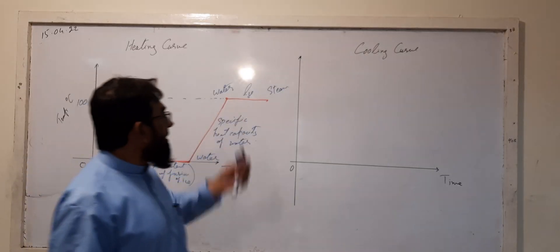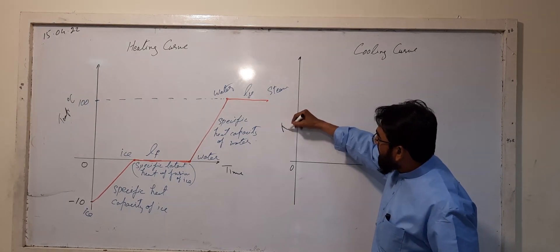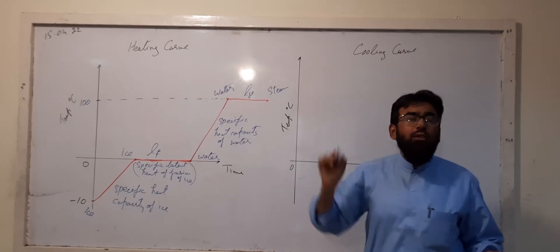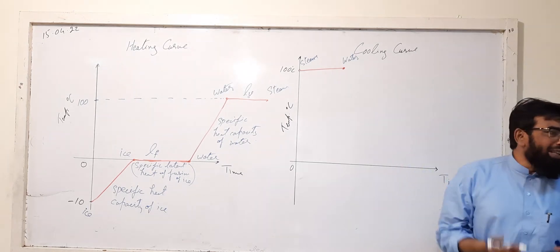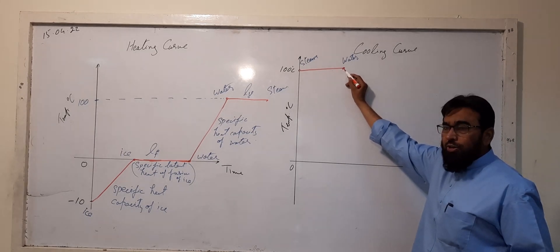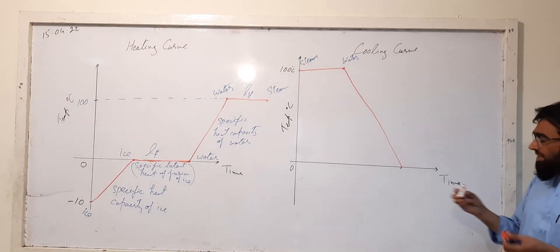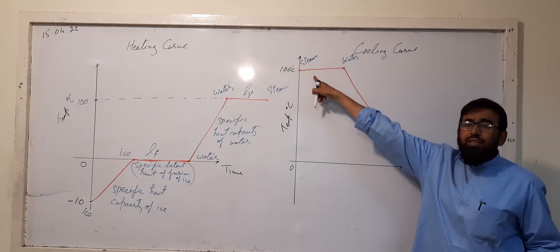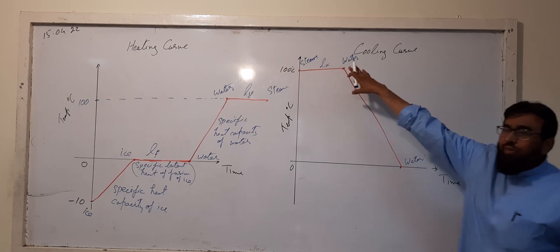In the case of the cooling curve, the same thing is happening in reverse. The temperature axis is taken in degree Celsius and we are dropping the temperature. If you are taking out heat from water which is at 100 degree Celsius, its temperature will drop. The latent heat of vaporization will be involved in the first stage.